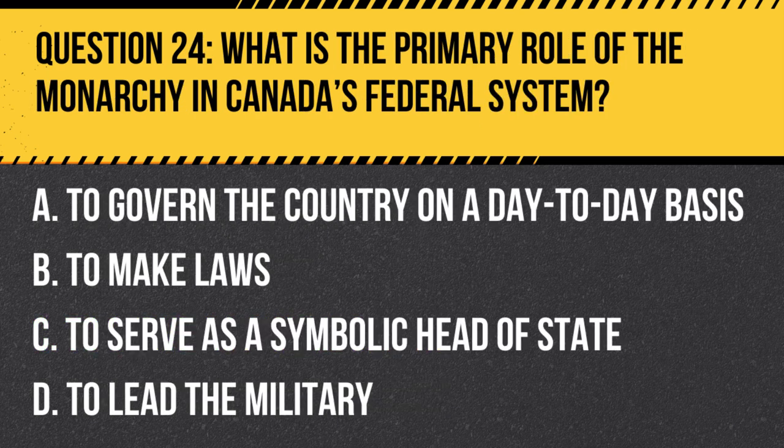Question 24. What is the primary role of the monarchy in Canada's federal system? A. To govern the country on a day-to-day basis. B. To make laws. C. To serve as a symbolic head of state. D. To lead the military.